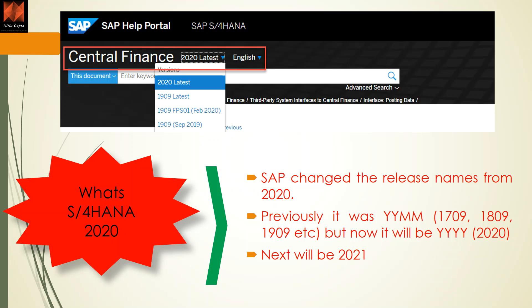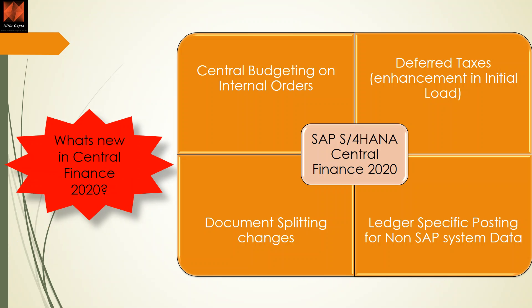SAP has changed the release names, so don't get surprised when you hear 2020. Initially it was YYMM, which means 1709, 1809, 1909 — and now it is 2020. Future releases would of course be 2021. As you can see on the screen, previous releases were by YYMM format and now it is 2020.